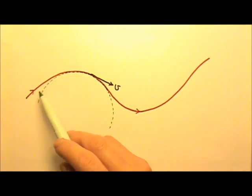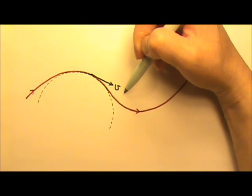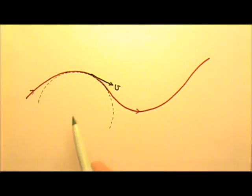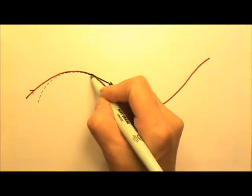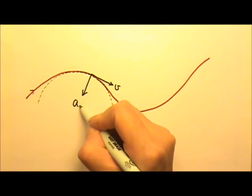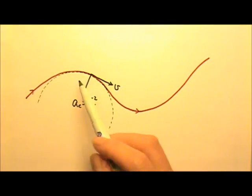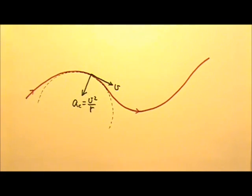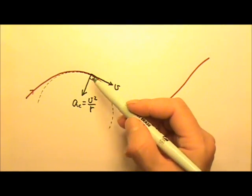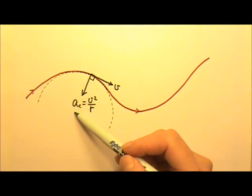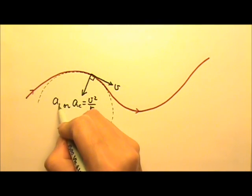Let's look at an object that follows this curvy path. When the object is here, it has a velocity tangent to the path. Since it is moving on a curve, it also has a centripetal acceleration, v squared over r, towards the center — towards the center of the circle that matches the curvature right over here. So the centripetal acceleration is perpendicular to the tangent direction. It goes along a radius, so we can also call it centripetal acceleration or radial acceleration.